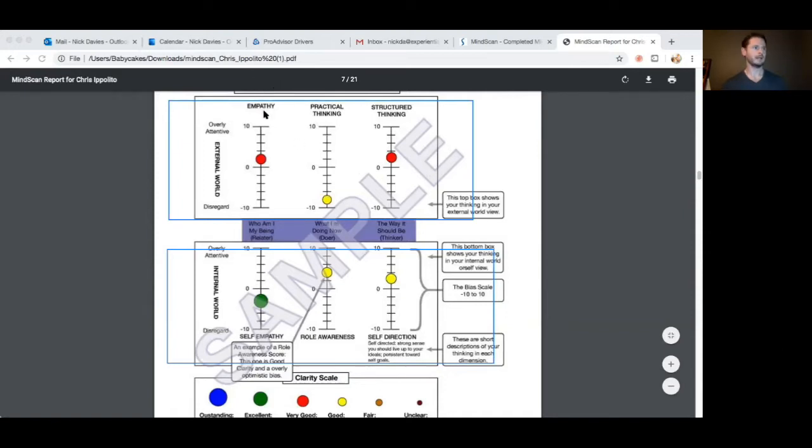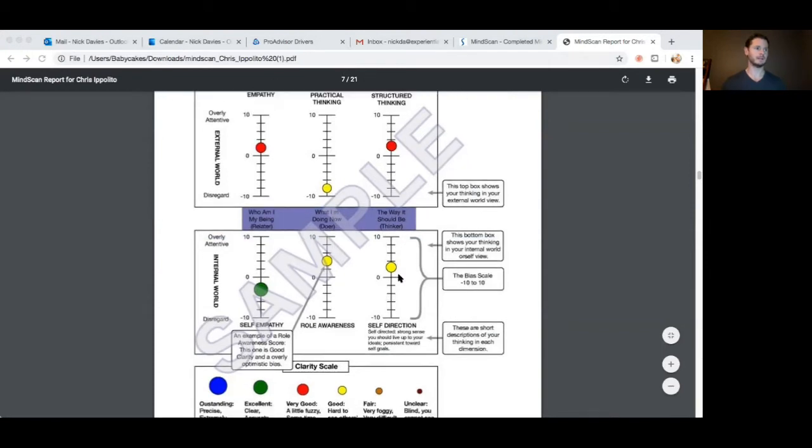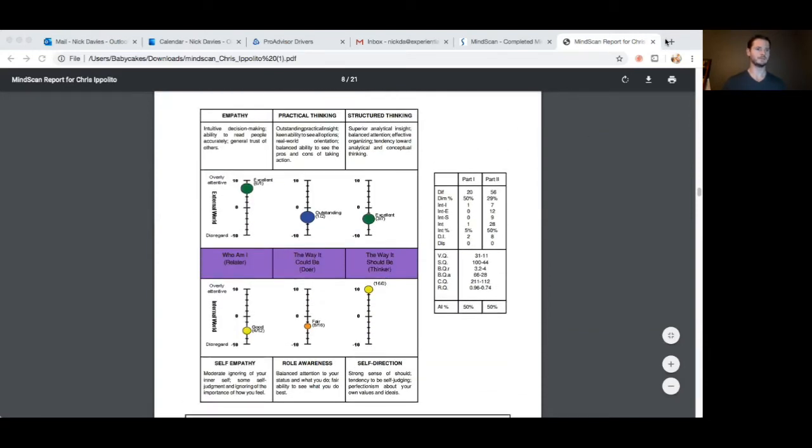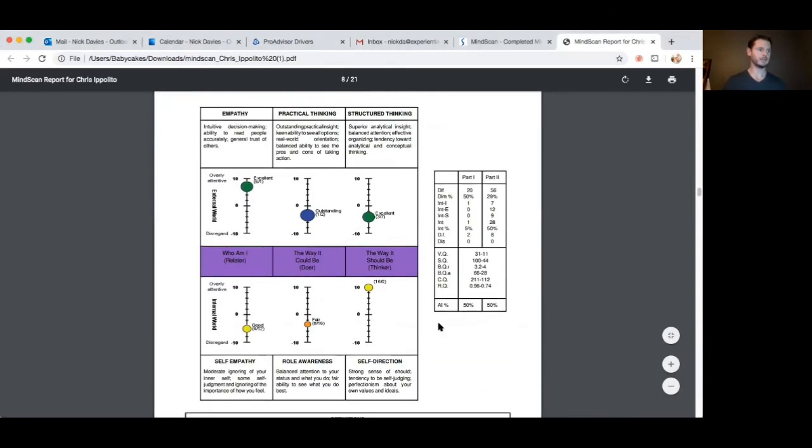And those six different areas, MindScan measures in two different ways. It measures on attentiveness. So the scale from plus 10 to minus 10 is how attentive you are in a particular area. And then the size of the circle is how clear you are in a certain area. So I see that at the bottom, the clarity scale. Okay. So let me go back to this and show you your MindScan. So here we go.